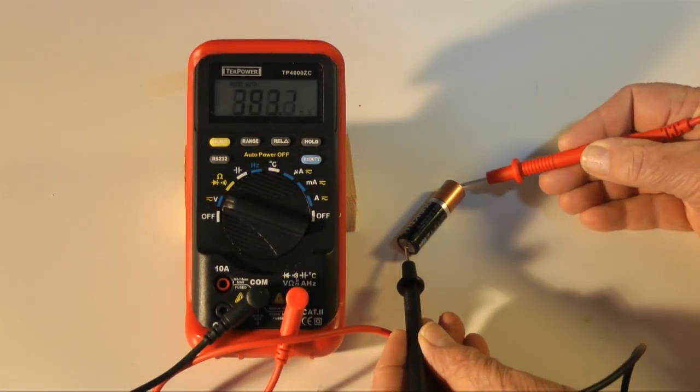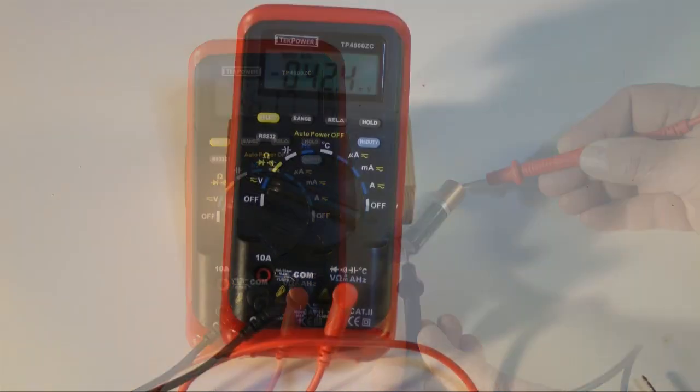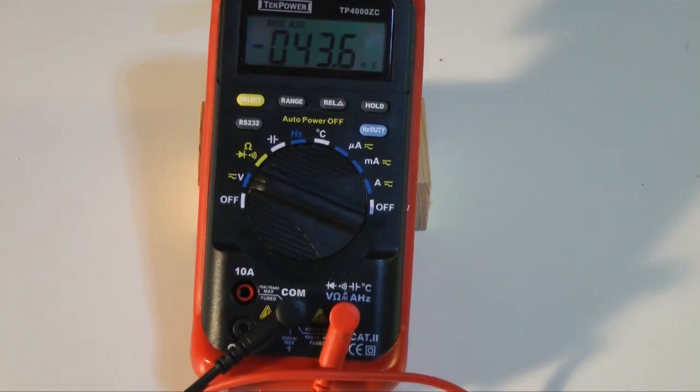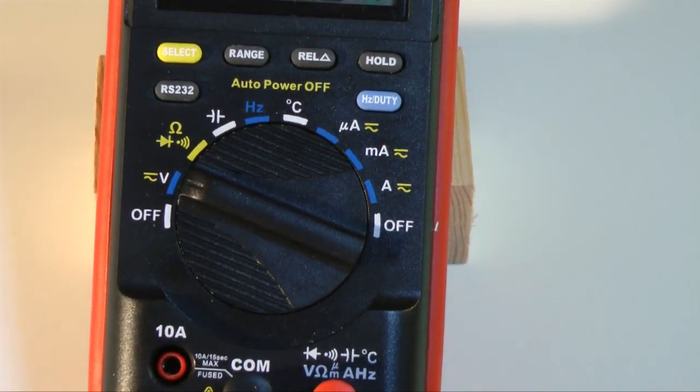This is a digital multimeter, a powerful compact device capable of measuring virtually all properties associated with electricity, including voltage, current, resistance, and capacitance.